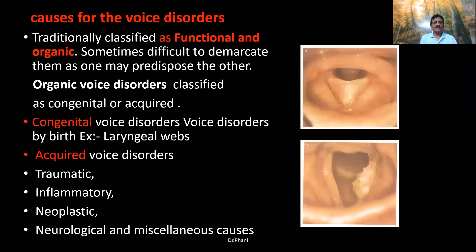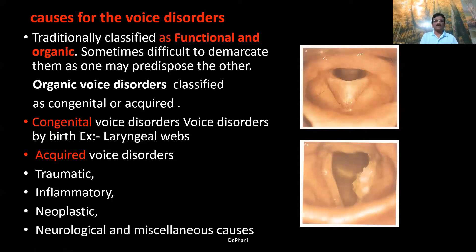Voice disorders are traditionally classified into two categories: functional and organic. It is often difficult to clearly demarcate between the two, because functional voice disorders may lead to organic problems, and organic voice problems are frequently associated with functional disorders. Organic voice disorders are further classified into congenital and acquired. Congenital voice disorders are those present from birth — for example, a laryngeal web, where the two vocal cords are fused by a membrane.